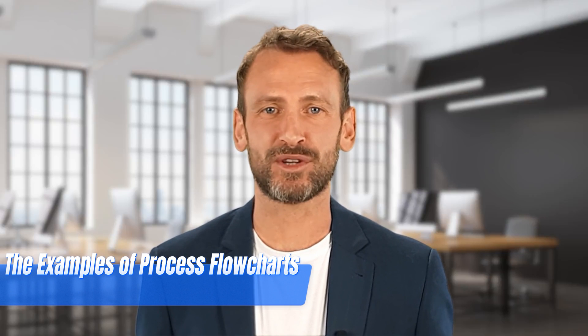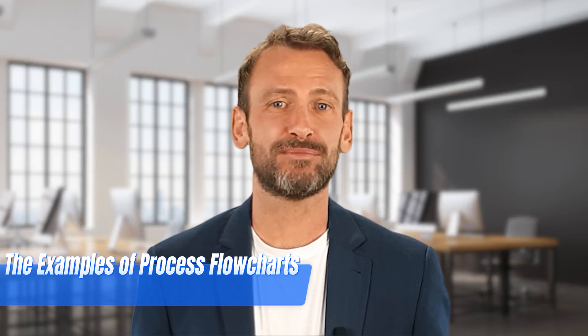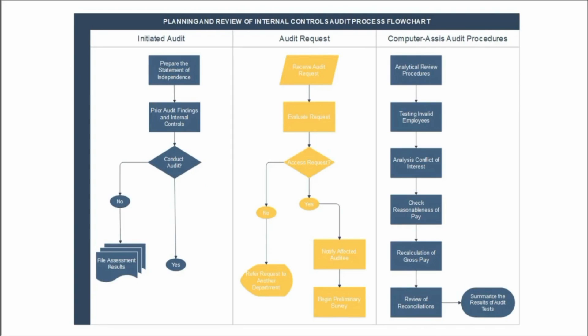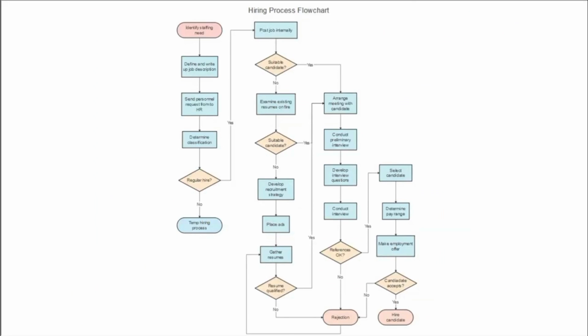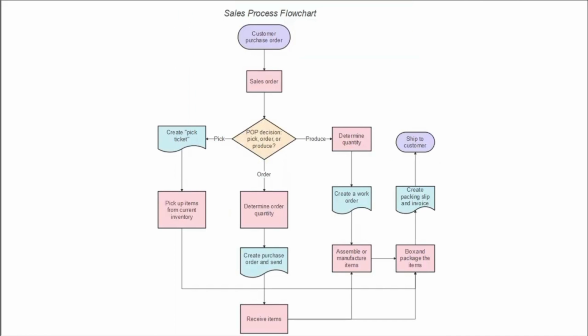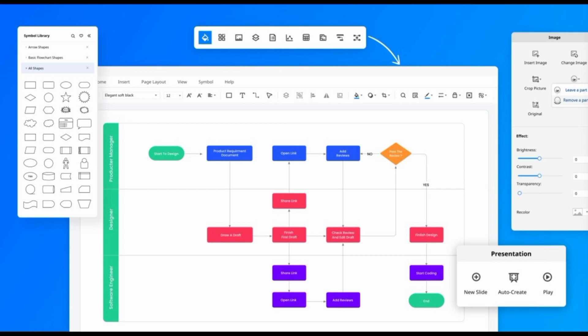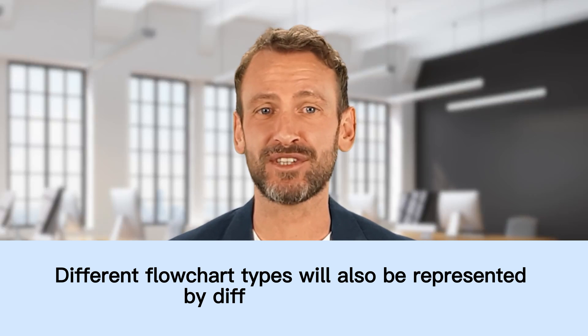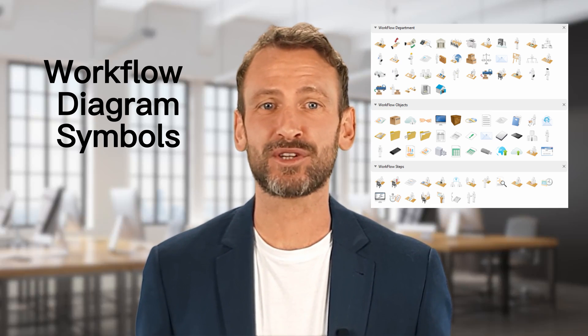Now let's see a few examples of process flowcharts already available in EdrawMax. Here's a planning and review of internal controls audit process flowchart, a hiring process flowchart, a training process flowchart, and a sales process flowchart. Similarly, EdrawMax has plenty of flowchart examples to use as resources. Different flowchart types are represented by different symbols, useful for anyone who needs flowcharts in any software project. These include: workflow diagram symbols, audit flowchart symbols, and BPMN symbols.